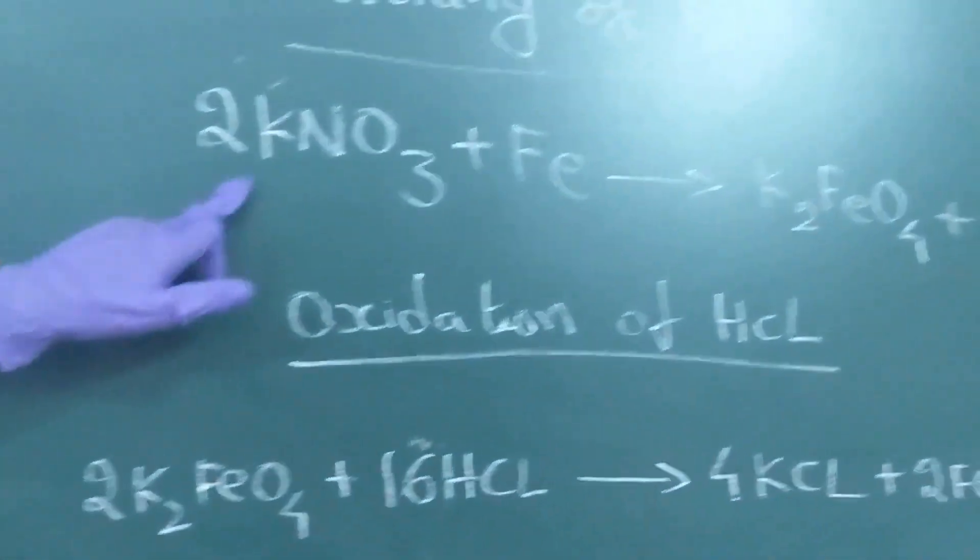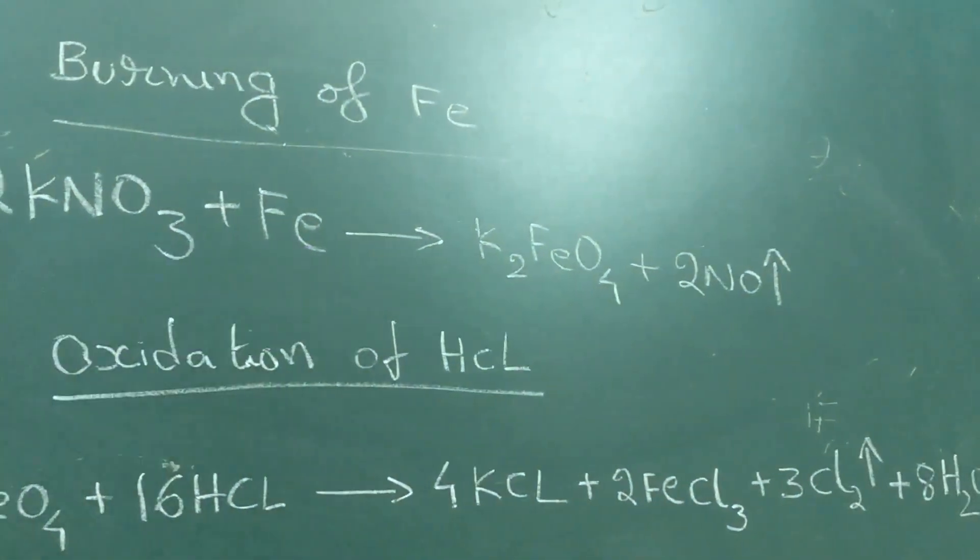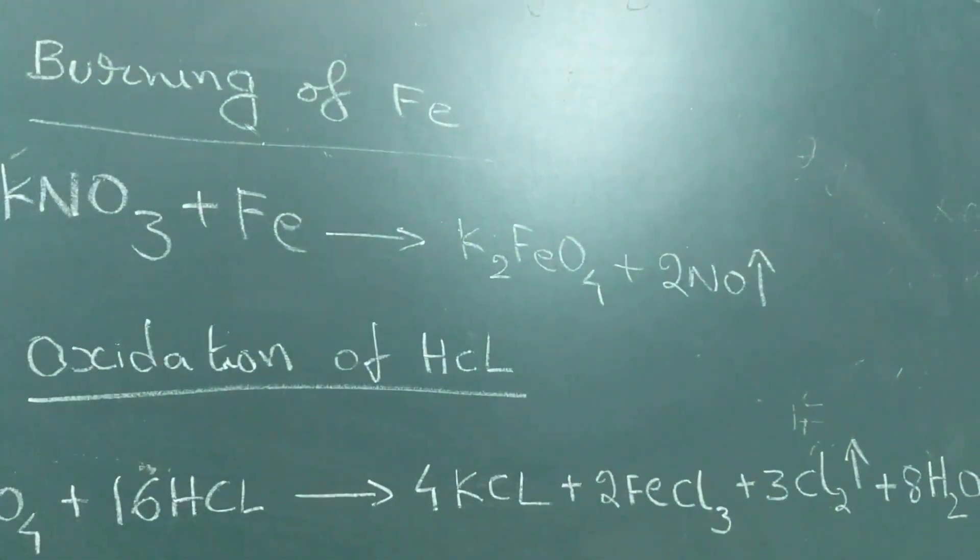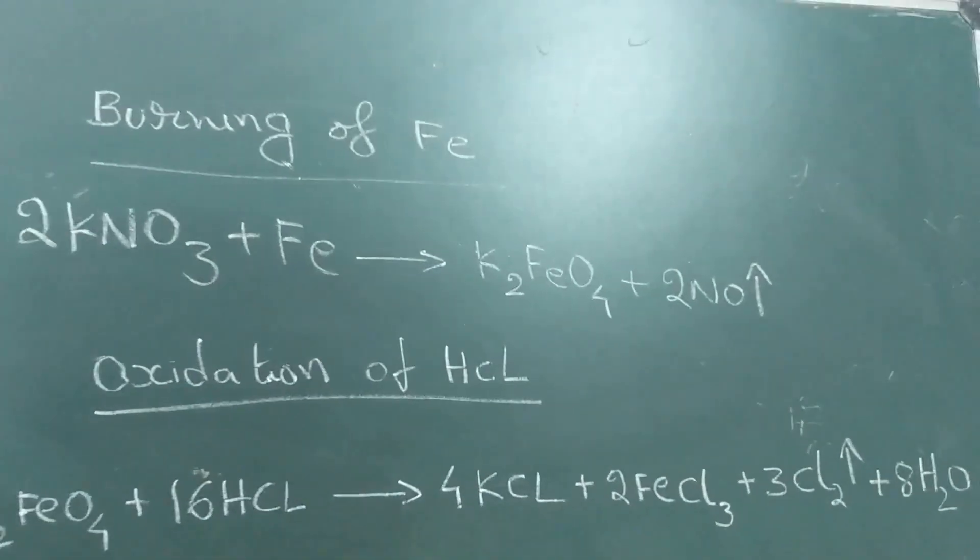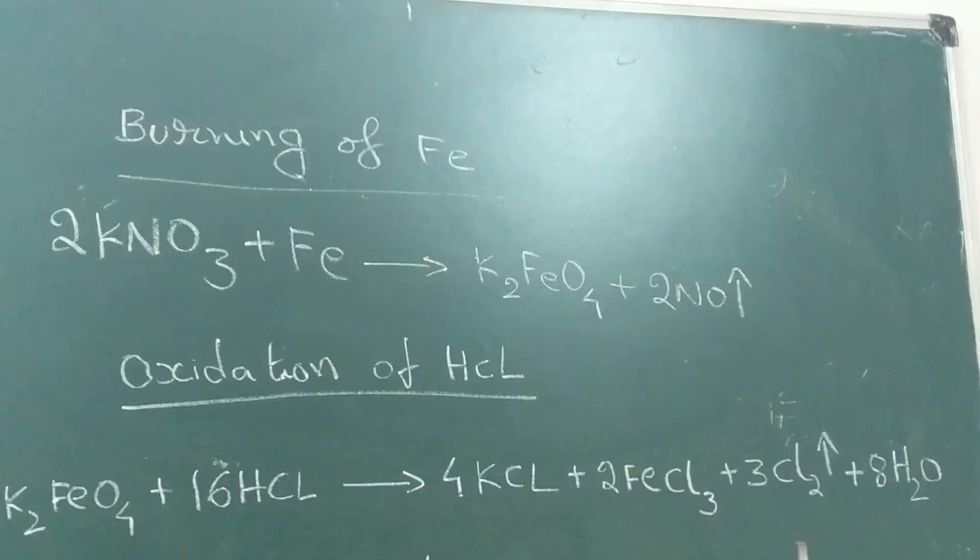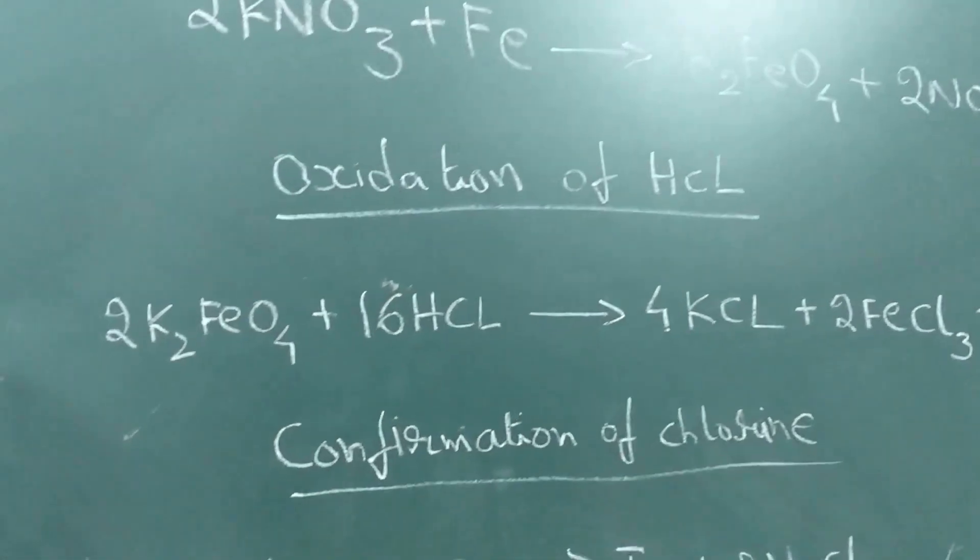The potassium nitrate has reacted with the iron and completely oxidized it to potassium ferrate, which is iron in the plus 6 oxidation state. The potassium nitrate has then been reduced to nitric oxide, which is a colorless gas. Now the product will be taken with the help of tweezers and placed in a vial.